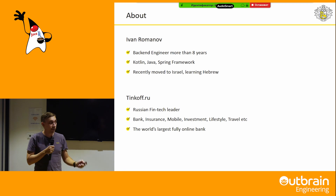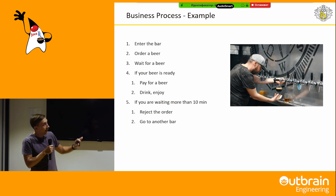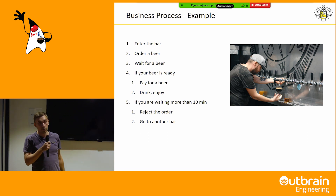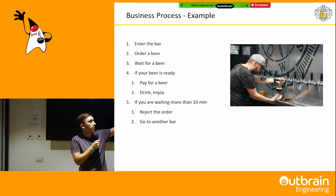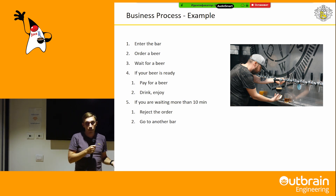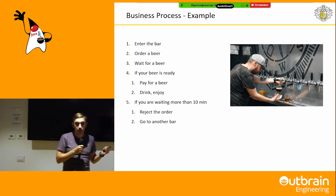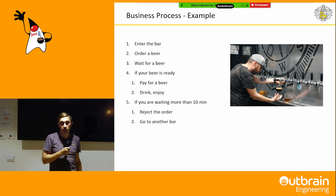Let's start from the business process. What is a business process? Here's an example: the business process of beer ordering. A client enters the bar and orders a beer. After that, they wait for the beer. If the beer is ready, they pay and enjoy it. If they wait more than 10 minutes, they reject the order and go to another bar.